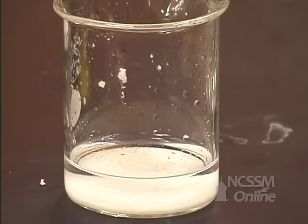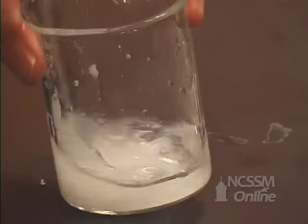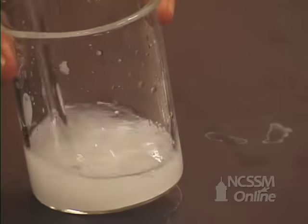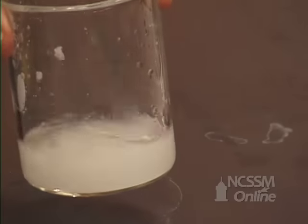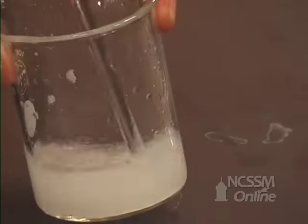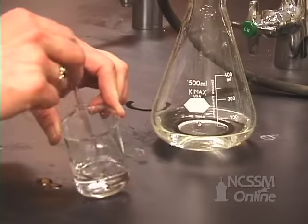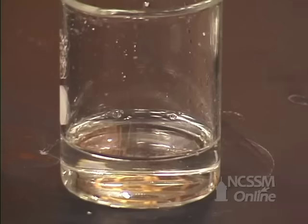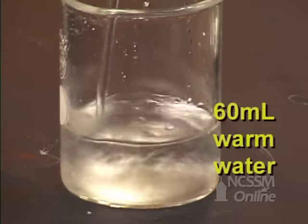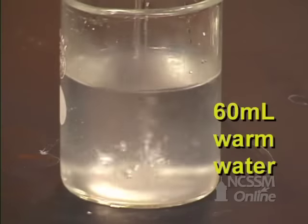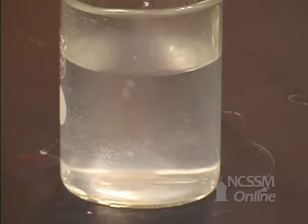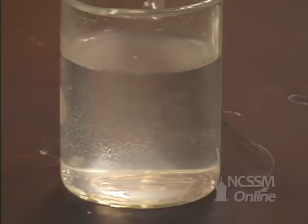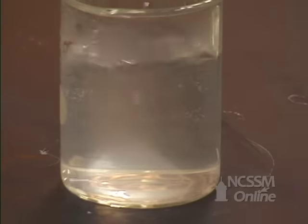Now we want to dissolve our aspirin in the alcohol so that we can recrystallize. Recrystallizing will allow us to get larger crystals of the acetylsalicylic acid. Now we're going to add 60 milliliters of warm water. You see it gets cloudy. There's actually a little bit of crystallization that's occurring.